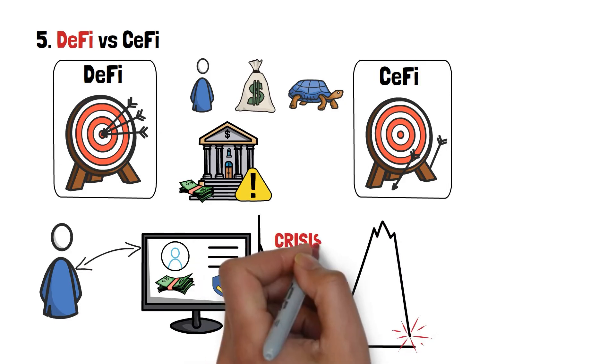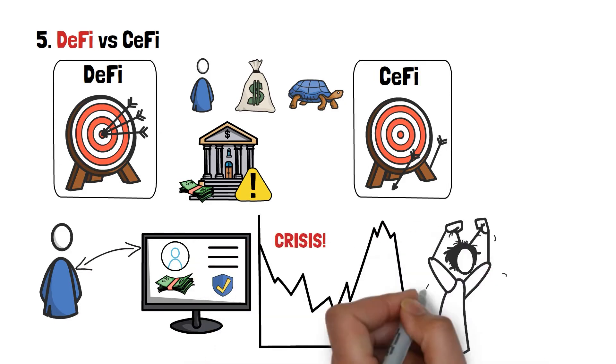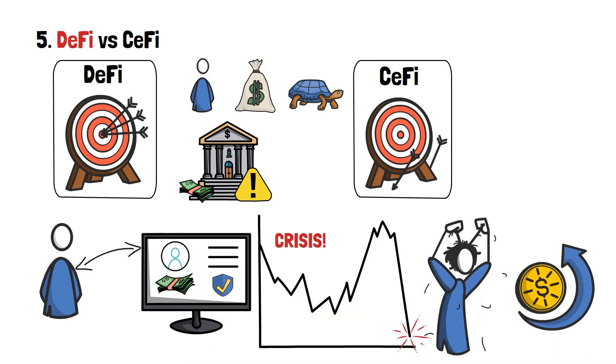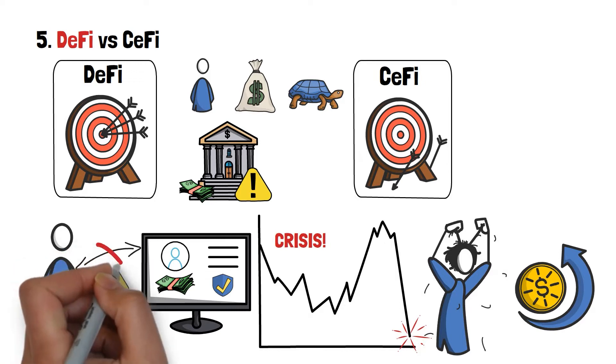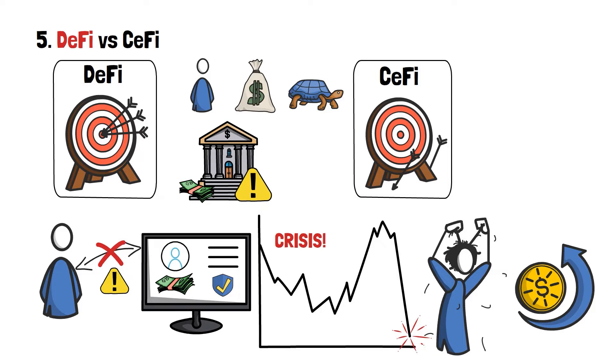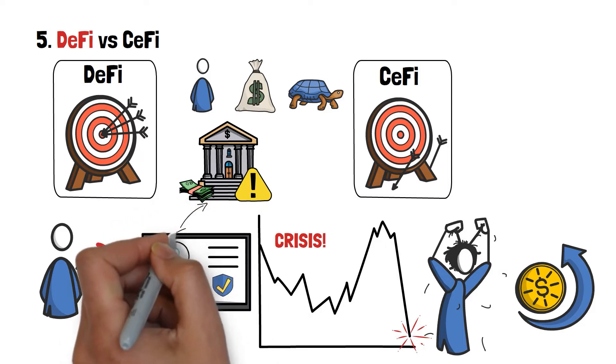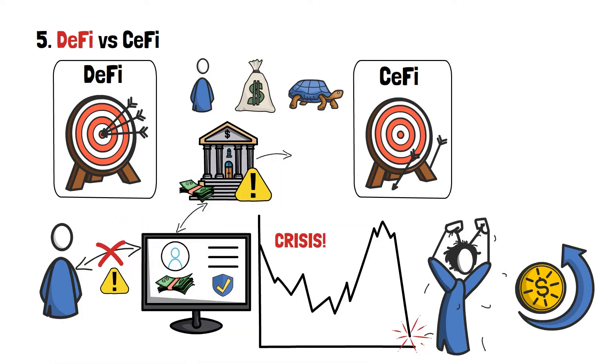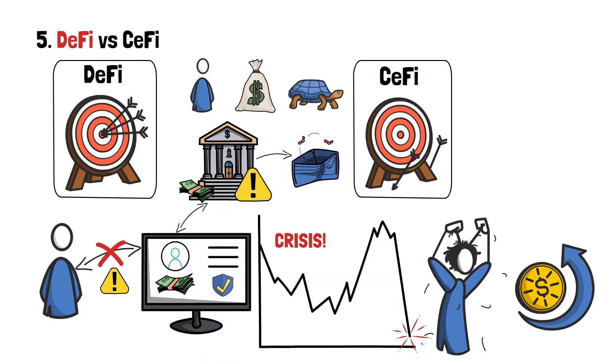Suddenly, a financial crisis comes and hits the world. Everyone's panicking, prices start not making sense, and banks all around start limiting user operations and even denying users access to their accounts in general. Then you find out that the bank that you've placed your money in has just gone bankrupt.